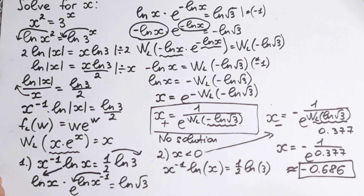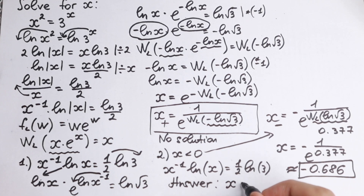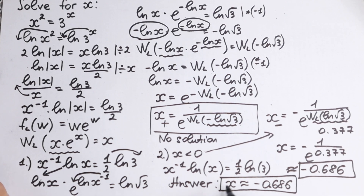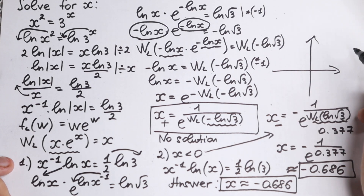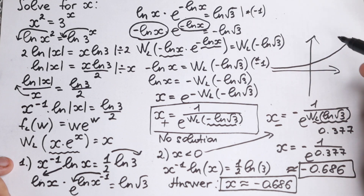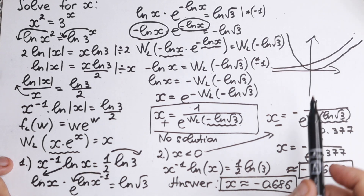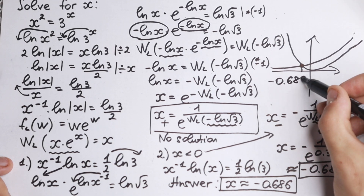This is our one and only real solution. To visualize: 3 to the power x is an exponential function and x² is a parabola. We can find only one point of intersection, and that occurs for negative x. For positive x, the curves don't intersect. So the single root is x approximately minus 0.686.